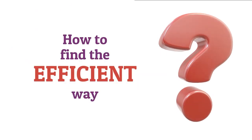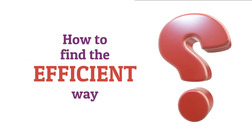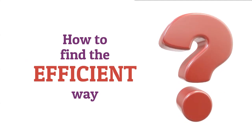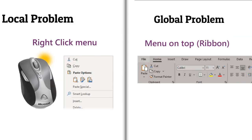How do you find the efficient way? Two very simple methods. If it's a localized problem, right-click and look at the menus — most probably the answer you need will be there. If it's a bigger global problem, go to the ribbon menu on top, figure out which menu by common sense, look at all the buttons, and you will find the answer. So with that, let's look at what OneNote has to offer.